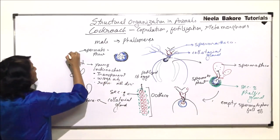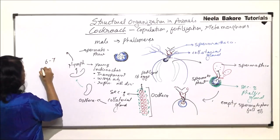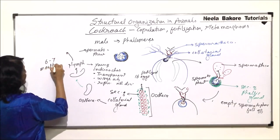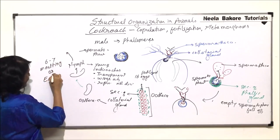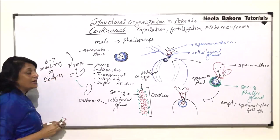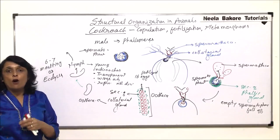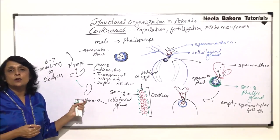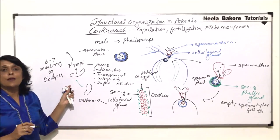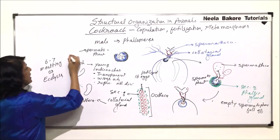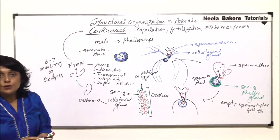These nymphs undergo six to seven moltings. Molting is also known as ecdysis — the outer exoskeleton made up of chitin is shed off and a new exoskeleton is formed. After these six to seven moltings, the nymph changes into the adult cockroach.